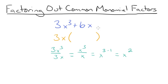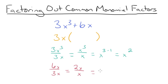Then we're going to divide 6x by 3x. Divide our coefficients by one another and we'll get 2x over x. And then x divided by x is just 1, so this simplifies to 2. These terms can be added together, and that's what's going to go inside our parentheses — x squared plus 2.